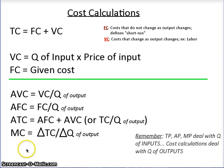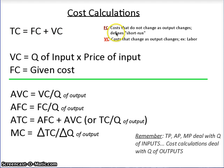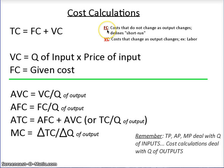Now that you have these things written down, real quick overview here: total cost equals fixed cost plus variable cost. Fixed cost refers to costs that do not change as output changes. Later we'll see how the short run is defined as the existence of fixed costs. The long run has no fixed costs.